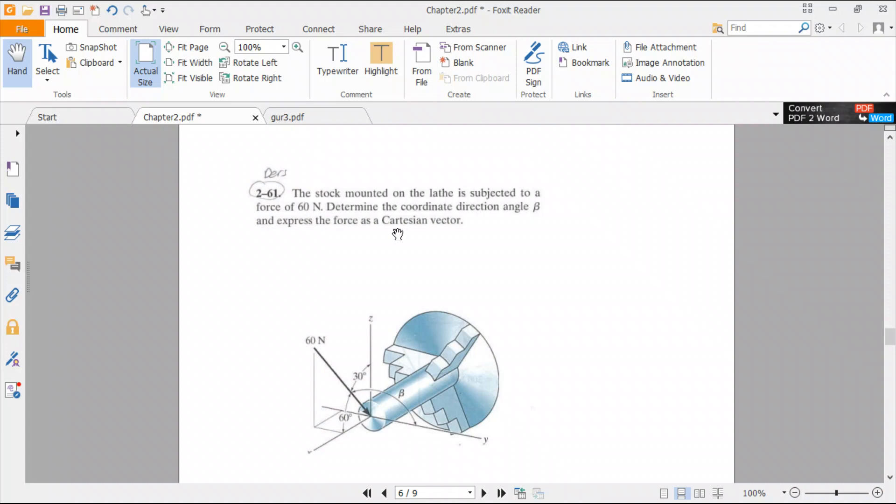Now, the point is this. We have a force of 60 N. We are given 60 degrees. So the force makes an angle of 60 degrees with the coordinate axis x and makes a 30 degrees angle with the coordinate axis z. And it makes an angle of beta with the y direction. And we are asked for the angle beta.